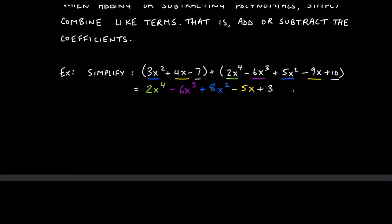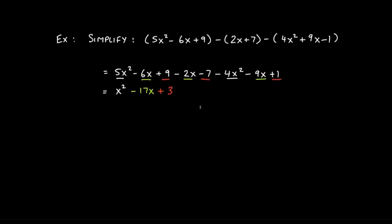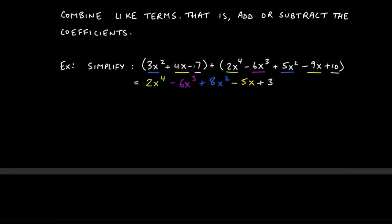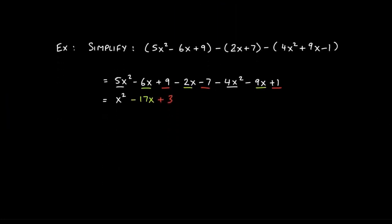The last example involves subtraction, which is a slight deviation. We cannot just combine like terms right away — we first have to distribute the negatives. When you distribute a positive, nothing changes; you essentially just remove the parentheses. But with negatives, we have to be careful about what the signs really are.